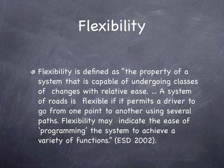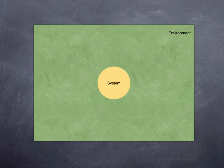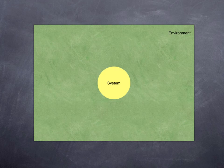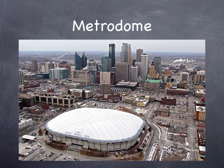Flexibility is defined as the property of a system that is capable of undergoing classes of change with relative ease. A system of roads is flexible if it permits a driver to go from one point to another using several paths. Flexibility may indicate the ease of programming the system to achieve a variety of functions. Again, we see a system — the yellow circle — embedded in an environment, a green rectangle. If the system can do many different things, we say it is flexible. The Hubert H. Humphrey Metrodome was a multi-purpose stadium in which professional baseball and football and college football all played, interspersed with monster truck rallies and home and garden shows. It was very flexible, but could not adapt to the changing needs of American sports fandom.